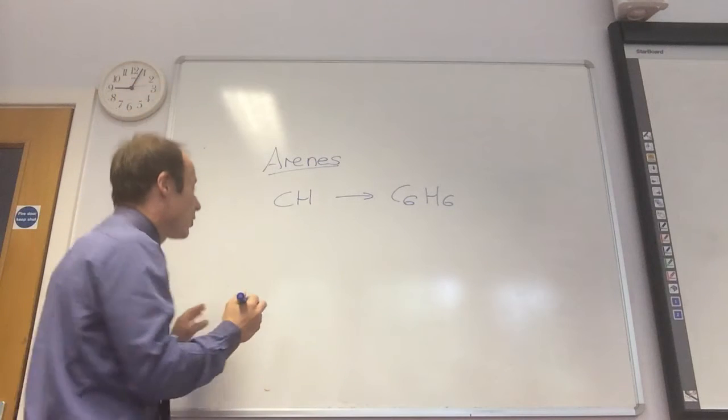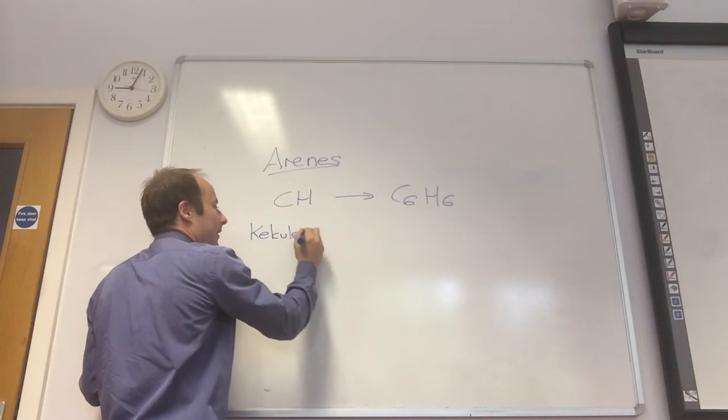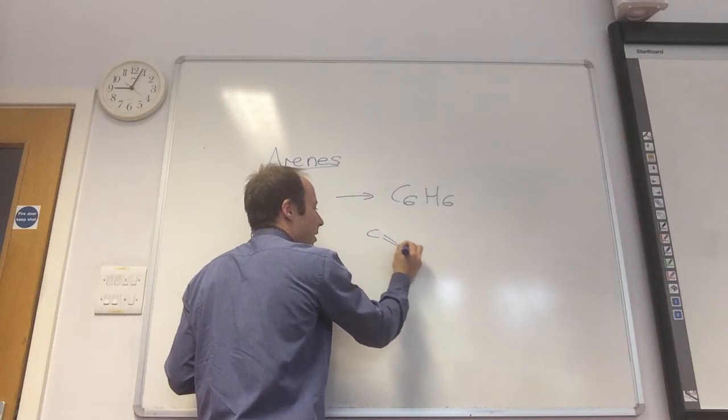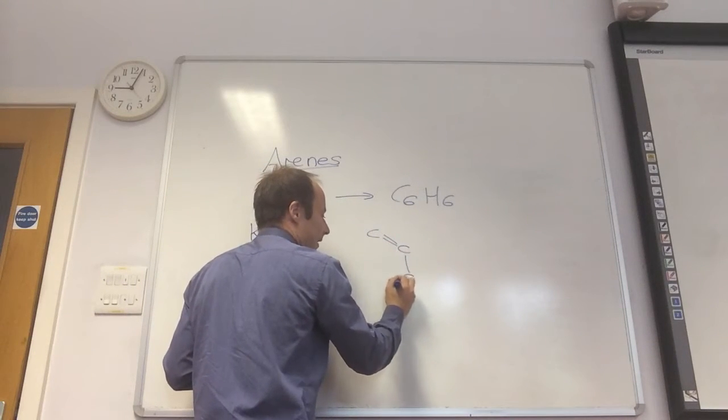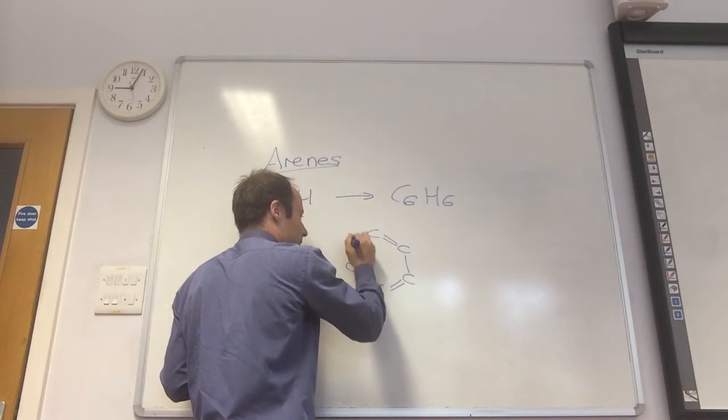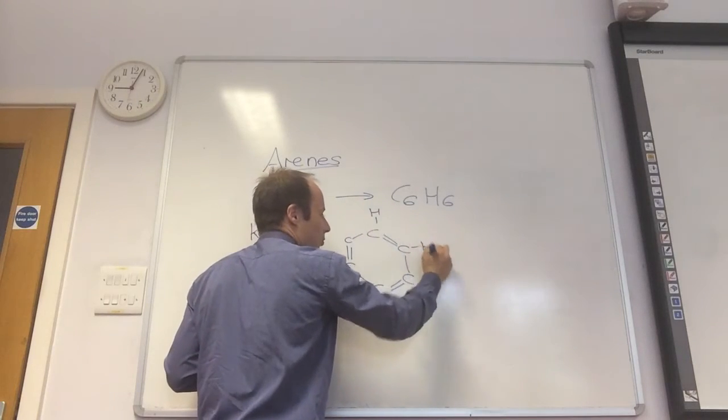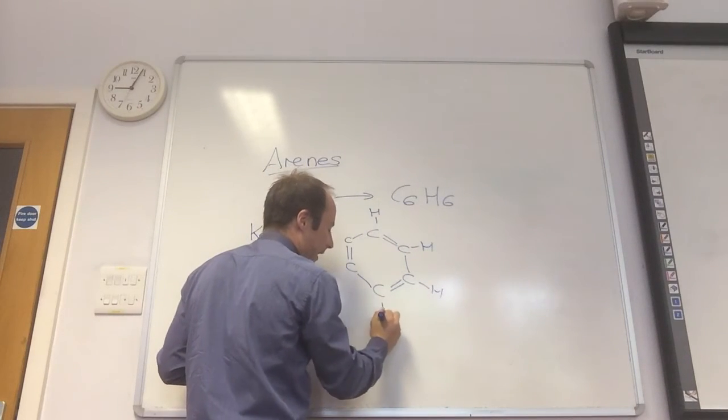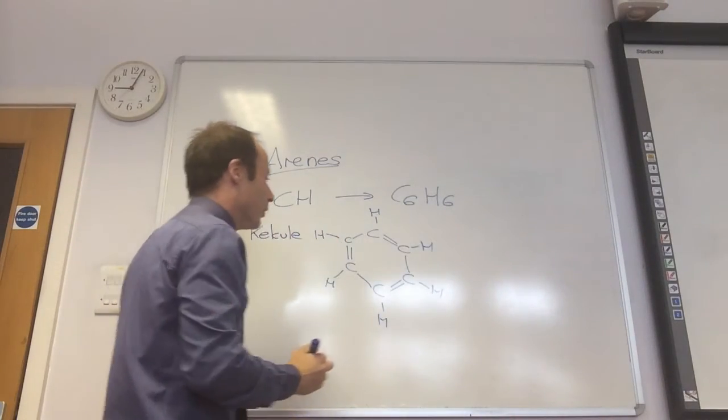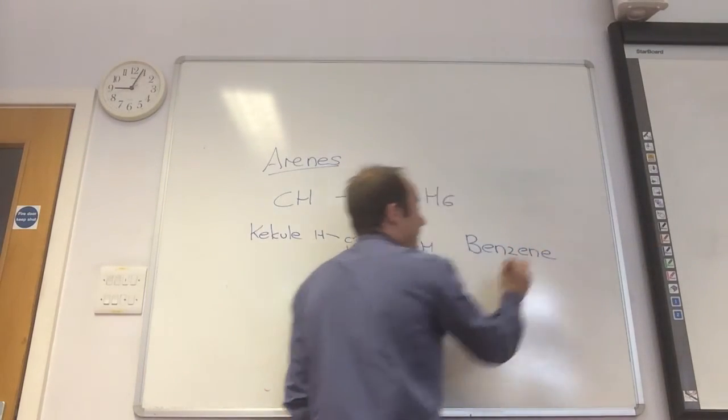And this is the structure that they came up with. A guy called Kekule came up with this structure. So Kekule turned around and said he thinks it looks like this: carbon as a six-membered ring, like so, each carbon has a hydrogen coming off, and I have alternating double and single bonds. And that's the simplest pairing called benzene.